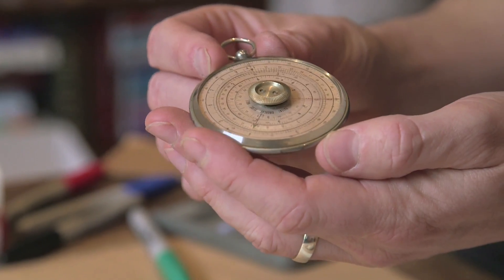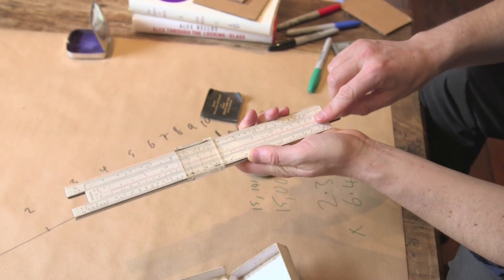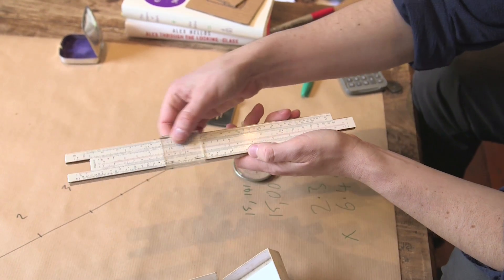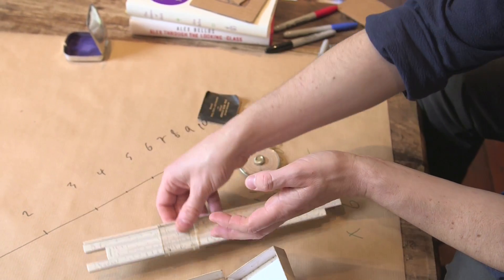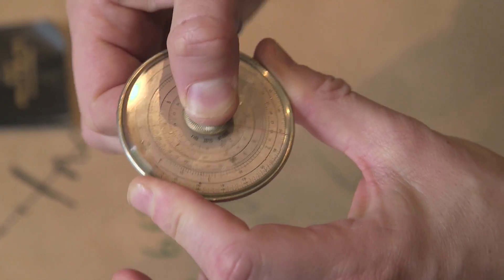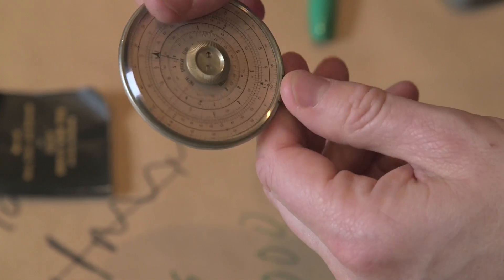Here, there are two moving parts. There is, you're moving this logarithmic scale against the top one, so two sides, and you've got the hairline. Here, you can move the middle one, and you've got the hairline. So, again, there are lots of different scales for doing lots of different things. I'm just going to concentrate on multiplication and division.